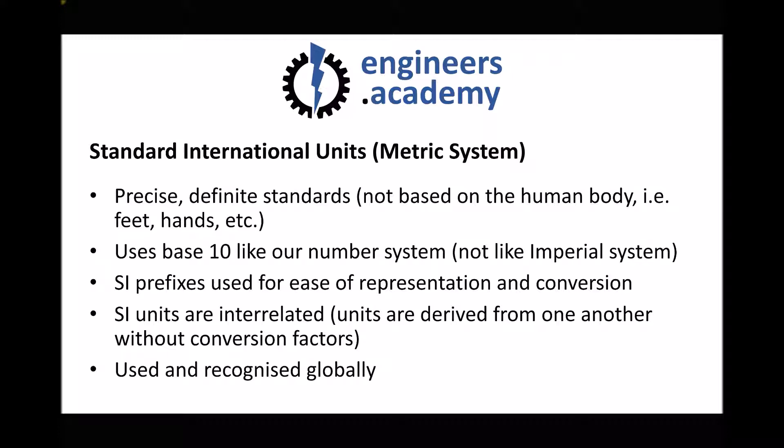Standard international units are based on precise, definite standards. For example, one kilogram is the mass of one litre of water, and that value will never change — it will be fixed. When we compare that to the old imperial system, a lot of those measurements were based on things such as the human body. The foot as a measure of length was originally determined by the length of a person's foot. So we can already see that the SI system has the benefit of being much more accurate.